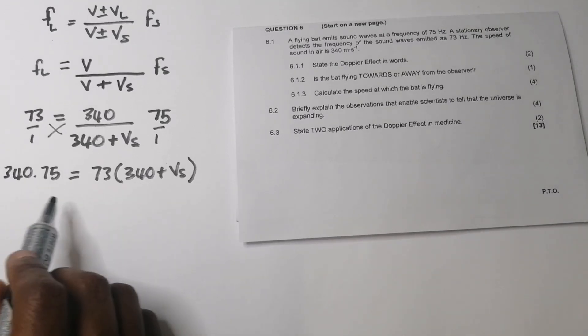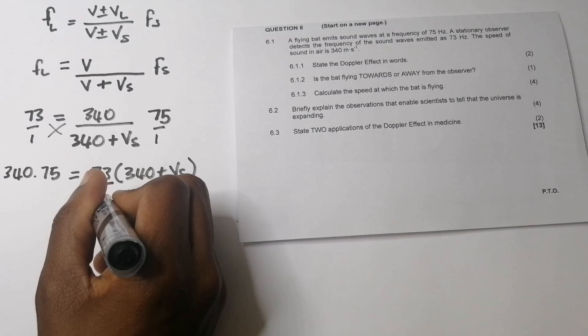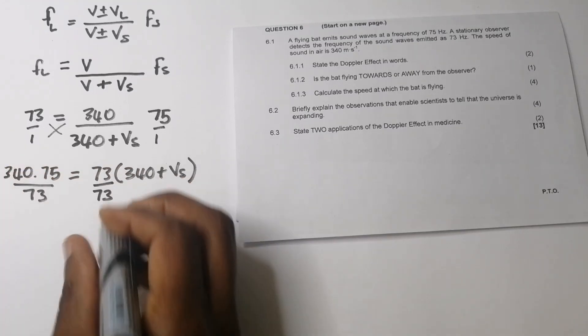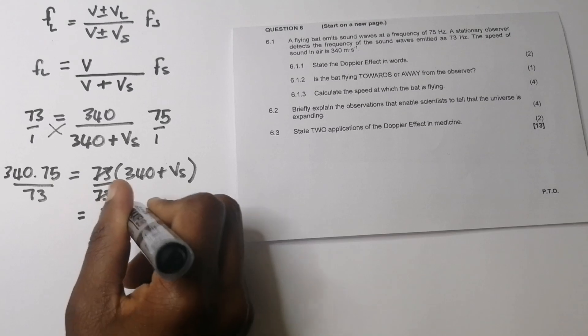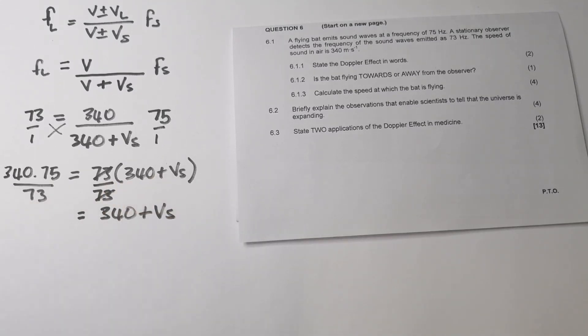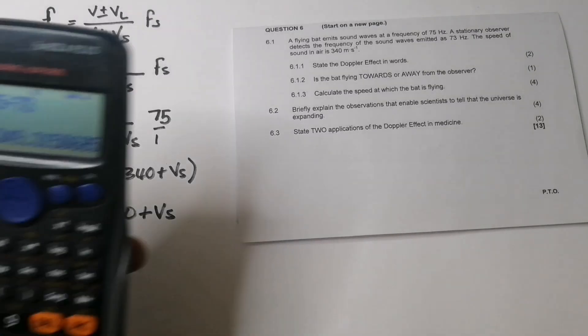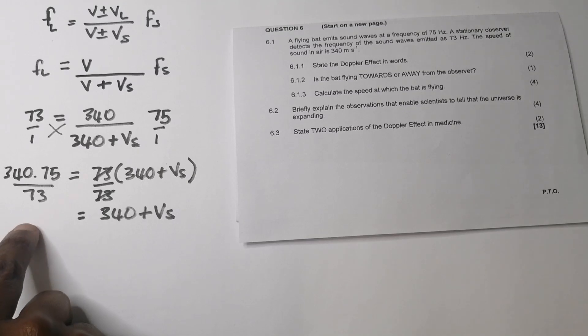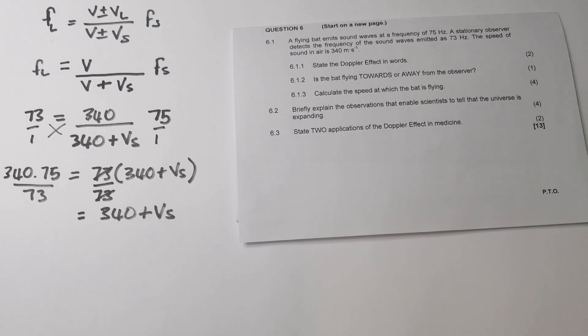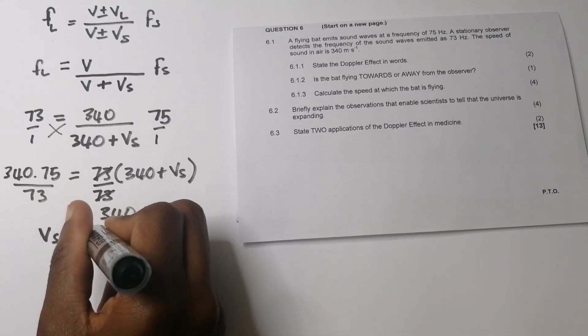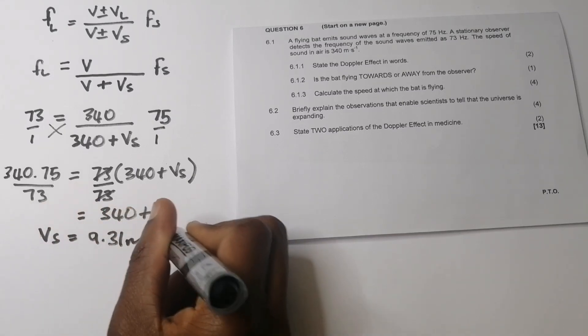So here we're going to have 340 times 75, which is equals to 73 into 340 plus Vs. So we've cross multiplied over there. So in this case, let's just make our calculation easier. So I'm just going to divide by 73 over there. So I will also do the same on that side. So that cancels with that. So here we are left with just 340 plus Vs. So that's 340 plus Vs. Now, let's try and work that out and find a simpler answer. So that's 340 multiplied by 75 over 73. So that's 340 divided by 73. And I get an answer of 349 on the left hand side. But so remember, in this case, we need to subtract that 340. So obviously, we are going to get a velocity. So I get a final answer of Vs is 9.31 meters per second.